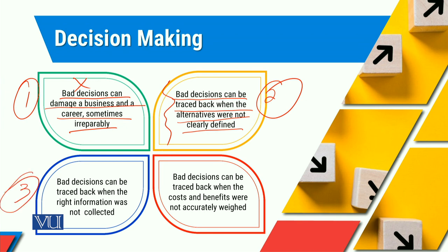The third phenomenon in decision making joh humein dhyan mein rakhna hoga woh yeh hai ke bad decisions can be traced back when the right information was not collected. Ager information deficiency ho, information appropriate na ho, information mein aise filters lag jayein joh information ko uski effectiveness mein reduce ker dhein, to obviously us information per based aapka faisla nuqsan deh ho sakta hai. Aur bade se bade corporations bhi sometimes bad decisions ka samana kar leti hain because wohan per information ki manipulation bhot had tak possible ho jati hai.